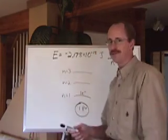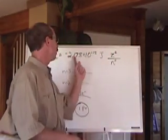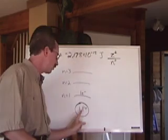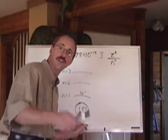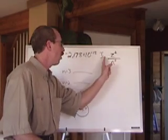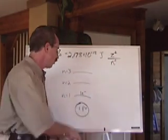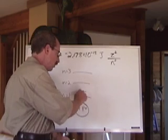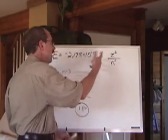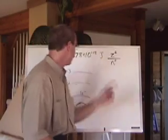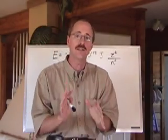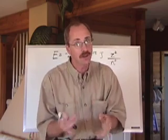He said the energy was going to equal negative 2.178 times 10 to negative 18 joules, times z squared. Z is just the number of protons in the nucleus, called the nuclear charge. For hydrogen it's always 1. 1 squared over n squared. And so if you want to know how much energy is at this level, plug in n, which is 1, and then of course the answer is going to be negative 2.178 times 10 to negative 18. It's a negative quantity of energy.